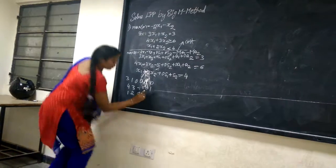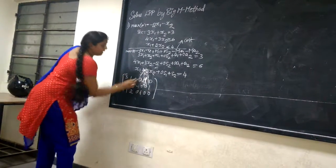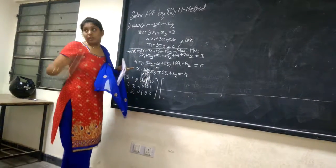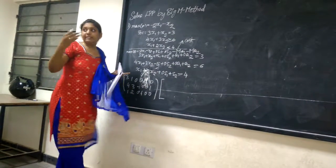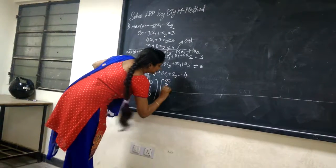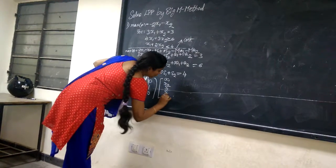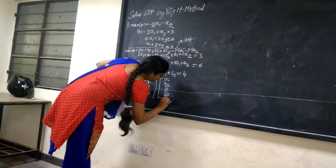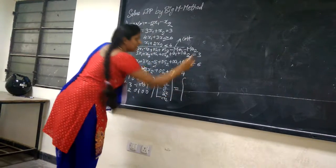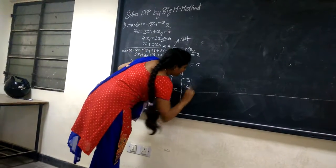The variables in the columns are: x1, x2, s1, s2, a1, a2. We substitute x1 = 0, x2 = 0, and s1 = 0 into the equations. From this substitution, we get: a1 = 3, a2 = 6, and s2 = 4. These become our basic variables. Now we draw the simplex table.